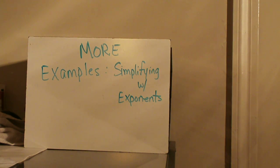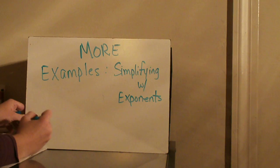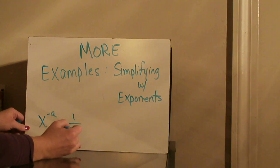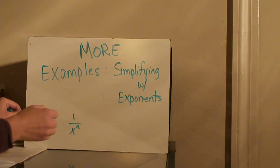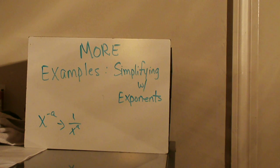This video covers three examples of simplifying with exponents, using the rule where if we have an exponent that is negative, we say 1 over x to now the positive exponent. This is the rule we're going to be using for these examples.